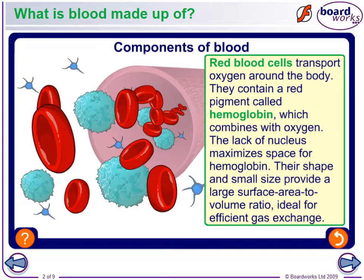Platelets are small fragments of cells. They've broken off from larger cells in the bone marrow and they're very important in blood clotting, which we'll see when we talk about transfusions.